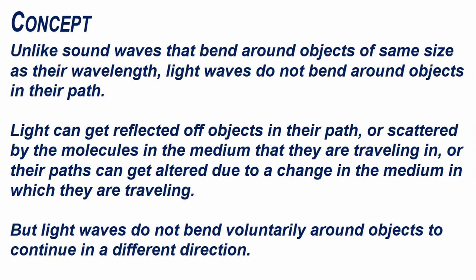Unlike sound waves that bend around objects of the same size as their wavelength, light waves do not bend around objects in their path. Light can get reflected off objects in their path or scattered by the molecules in the medium that they are traveling in, or their paths can get altered due to a change in the medium in which they are traveling. But light waves do not voluntarily bend around objects to continue in a different direction.